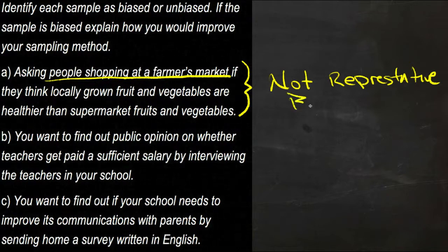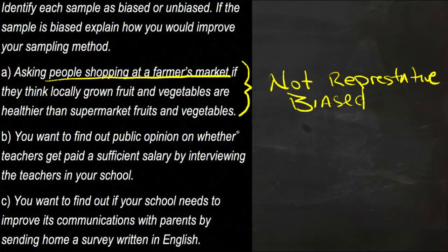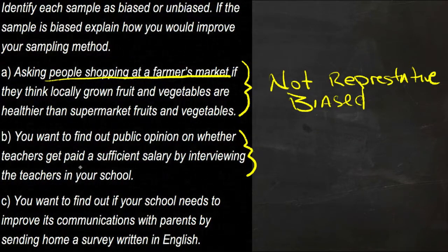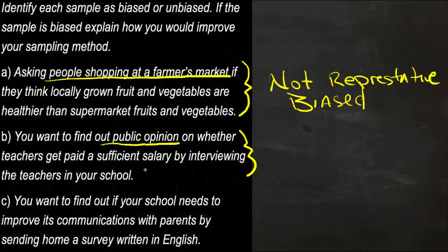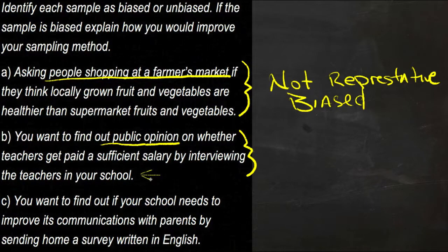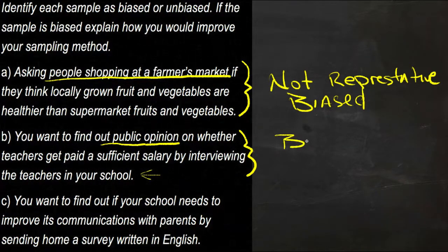Another term for this is that this is a biased group. For our second example, you want to find out public opinion on whether teachers get paid a sufficient salary by interviewing the teachers at your school. Chances are, if you're interviewing the teachers at your school, they're going to be more likely than most people to think that their salary is not sufficient. So really, this is also going to be a biased group.